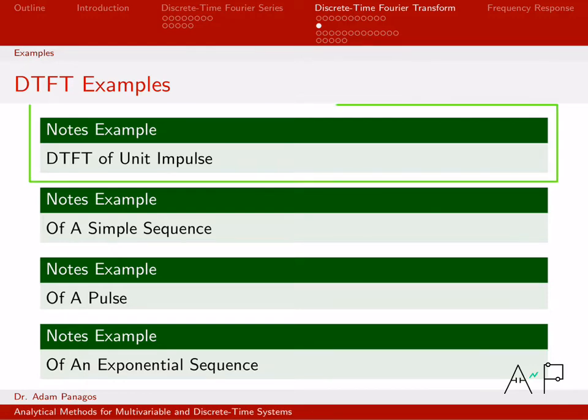We're going to start off with a really simple signal, basically the simplest signal you can deal with, one that is zero for every single time instant except for one value. So we're going to find the DTFT of a unit impulse. Remember, the unit impulse is zero everywhere, but it's one at time zero. So we'll go ahead and work that example in this video.